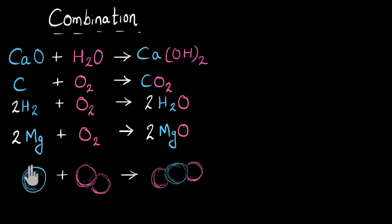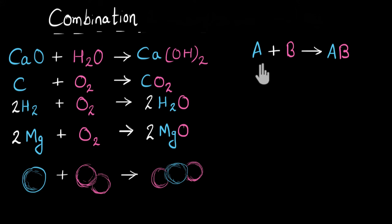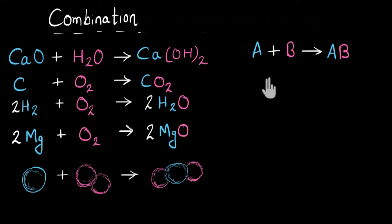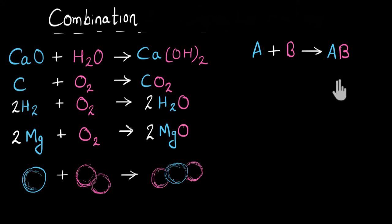If I have to write the general structure of these reactions, it looks like this: A plus B gives AB. It could even be three or four reactants — A plus B plus C plus D — any number of reactants, they all combine to give one single product. That is an example of combination reaction.